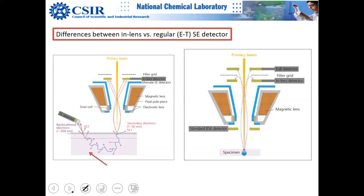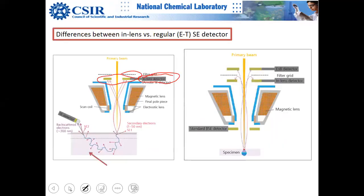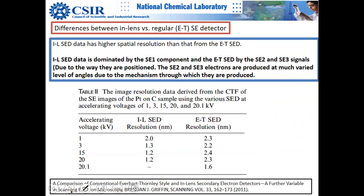The in-lens detector is a concentric detector similar to the HAADF detector in TEM. In the in-lens design, no bias voltage is applied. This allows you to work at lower primary beam voltages and provides better resolution. The in-lens detector reduces contamination from SE2 and SE3 signals.